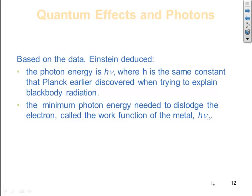The minimum photon energy needed to dislodge electrons, called the work function of a metal, is Planck's constant times the threshold frequency.